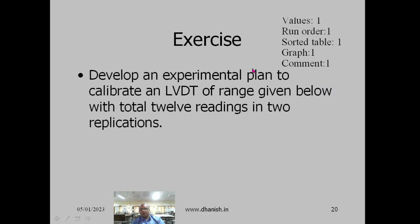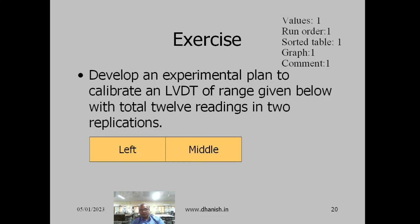You can do this exercise in EduServer to develop an experimental plan to calibrate an NPDT of range as given, with total 12 readings and 2 replications. EduServer will give you values for different ranges in random order. With that, we complete the presentation on how to generate randomized run orders.